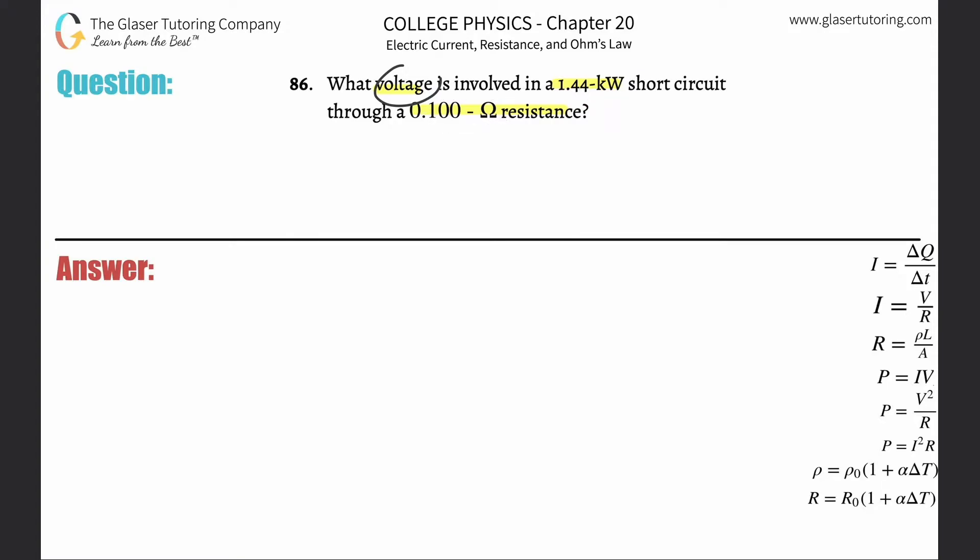The formula that relates those variables is power equals the square of the voltage divided by the resistance: P = V²/R.